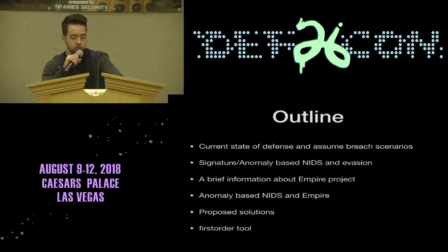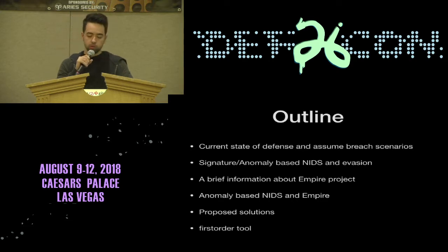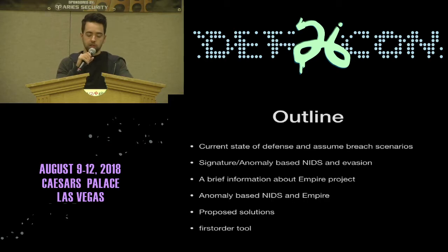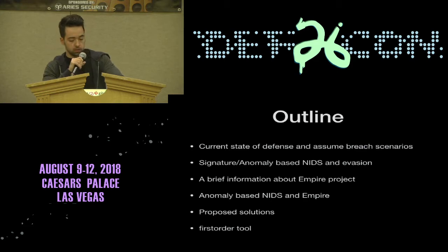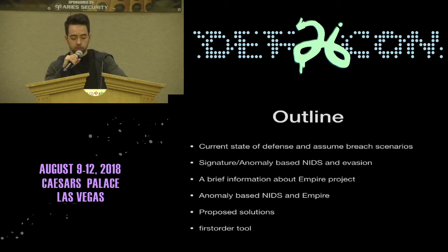In this presentation, I will start by talking about the current state of defense and how we prefer assume-breach scenarios. After that, we will check advantages and disadvantages of network intrusion detection systems and their evasion techniques. Then we will check the Empire project and its situation against anomaly-based systems, followed by proposed solutions and a tool which can be a candidate solution for these problems.